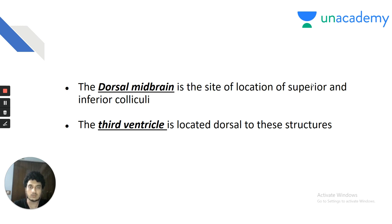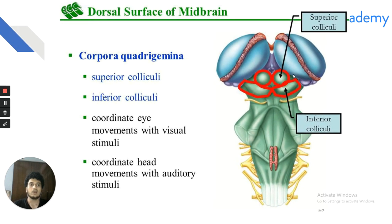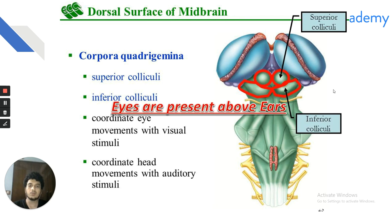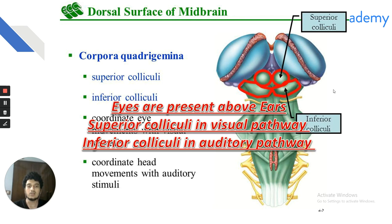The dorsal midbrain is the site of the superior and inferior colliculi — the corpora quadrigemina. They coordinate eye movements with visual and auditory stimuli. A simple mnemonic: eyes are above ears, so superior colliculi coordinate eye movements with visual stimuli, and inferior colliculi coordinate head movements with auditory stimuli. Superior colliculi are in the visual pathway, inferior colliculi in the auditory pathway.